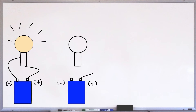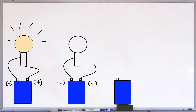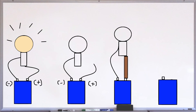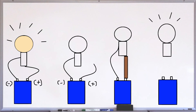This lamp is off because of this connection. The lamp is off because the electricity doesn't pass through wood. Thank you.